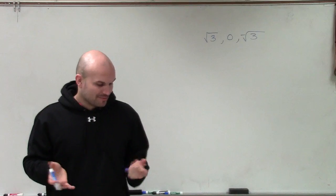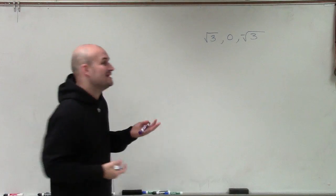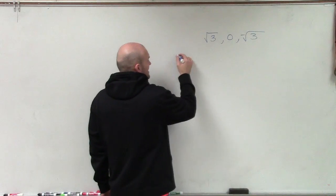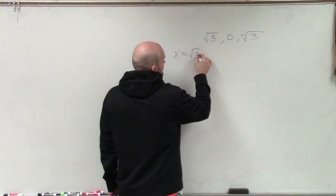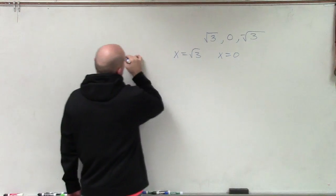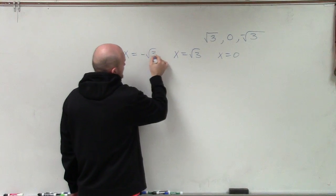Now, the next step, what I'm going to do is take all of my zeroes and set them equal to 0, because that's where they kind of came from. x equals the square root of 3. x equals 0. And actually, let's do the x equals negative square root of 3.